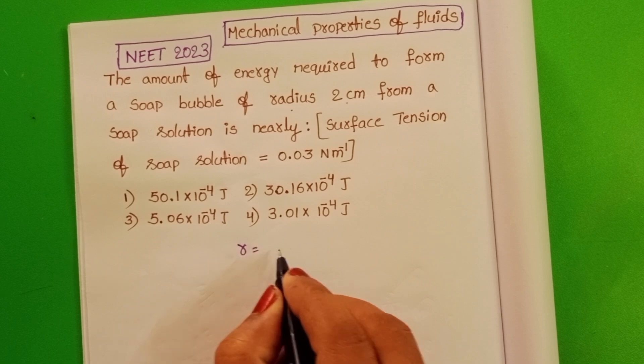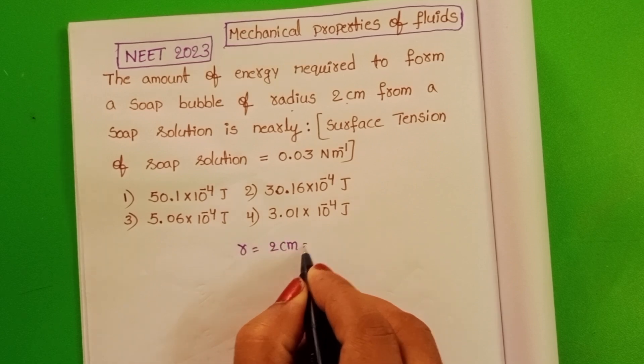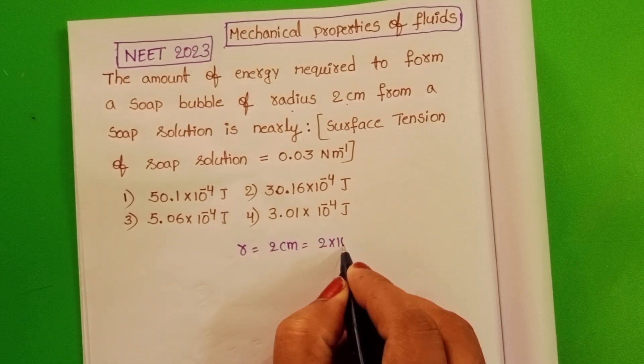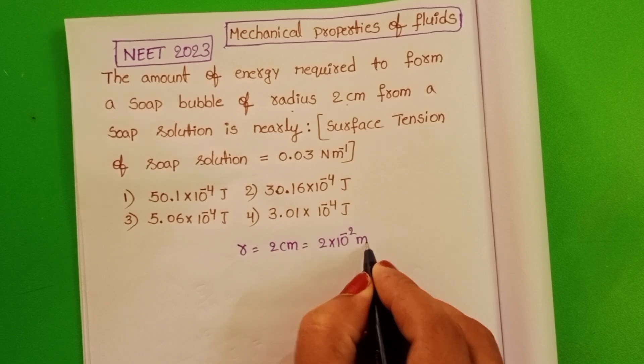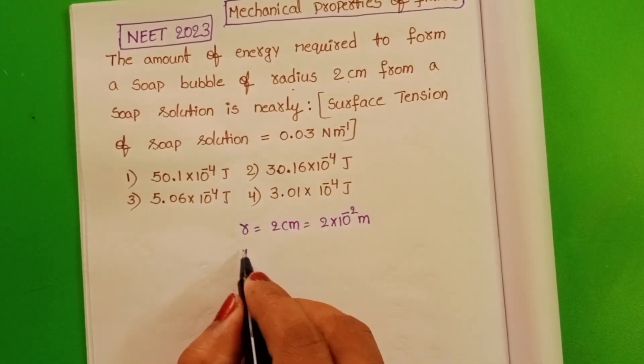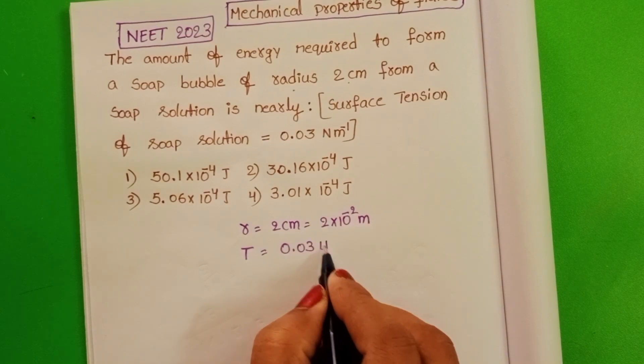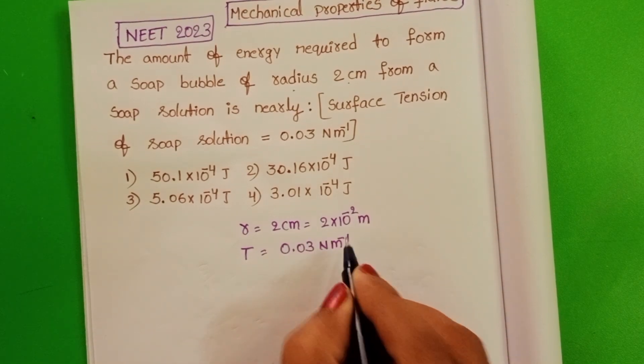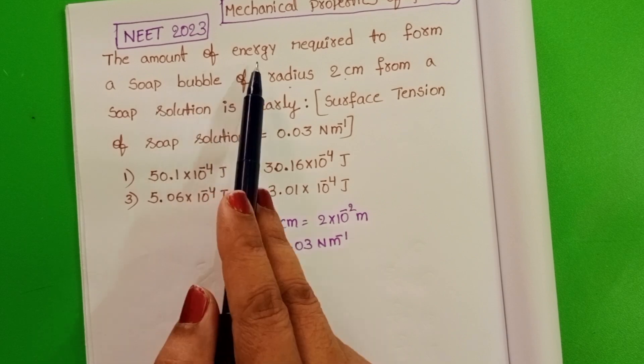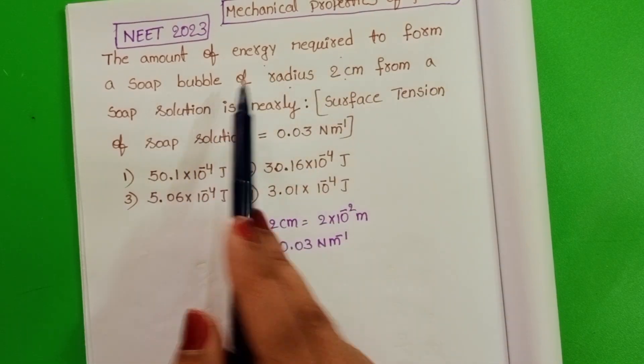Given radius of the soap bubble is 2 cm, convert into meters: 2 into 10 power minus 2 meters. Given surface tension 0.03 N per meter. Here we have to find out the amount of energy required to form the soap bubble.